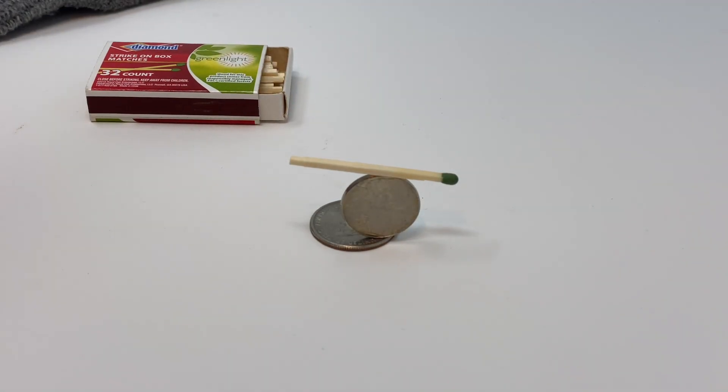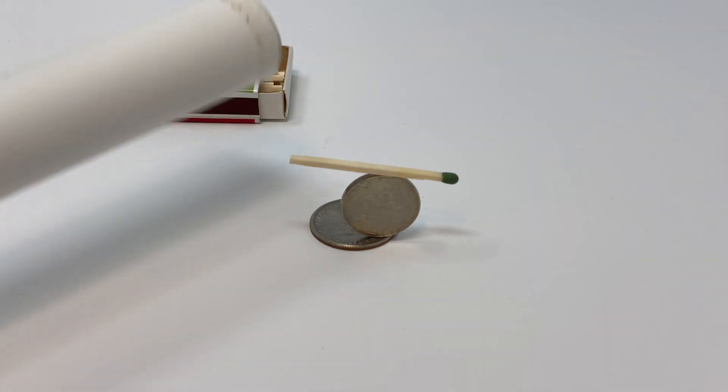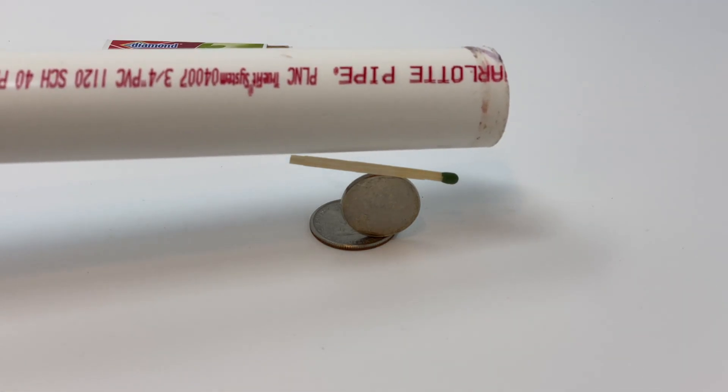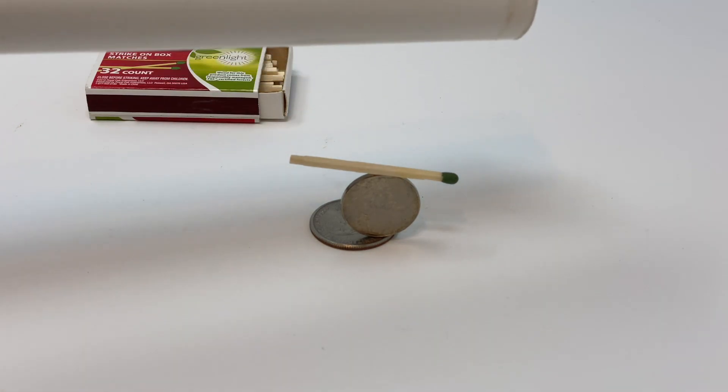Now I've got a piece of plastic here, just a plastic tube. You can use a ruler for this. I'm going to bring it close. And you'll see that the plastic tube does not have any effect on the matchstick at all.